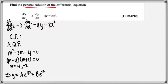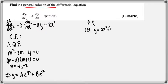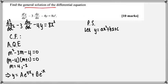We have found the complementary function. We then need to look at finding the particular solution or particular integral. We look at the right-hand side, and this tells us the general form of the particular integral. Because we see 8x², the general form of the particular solution will be a quadratic. So we let y = ax² + bx + c — this is the particular solution we're looking at finding — and we need to figure out what a, b, and c are.